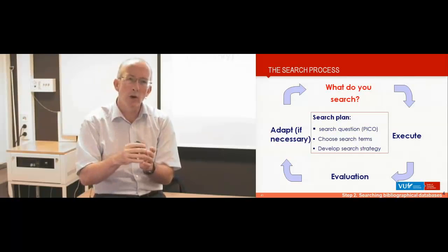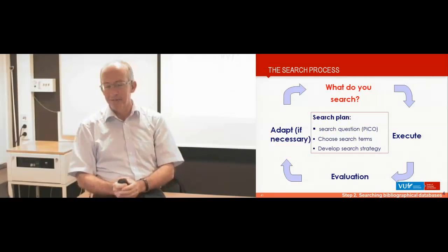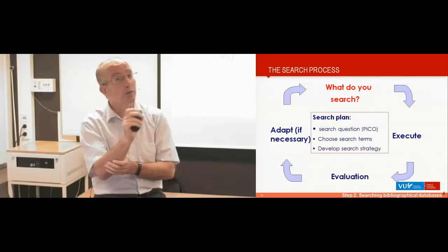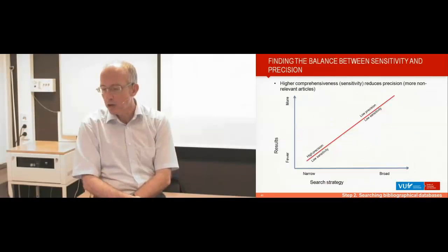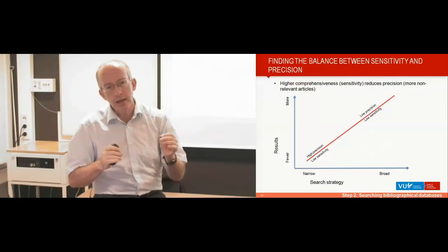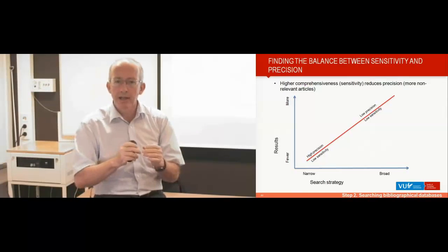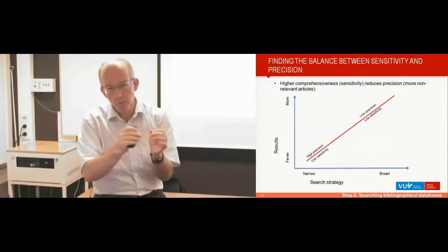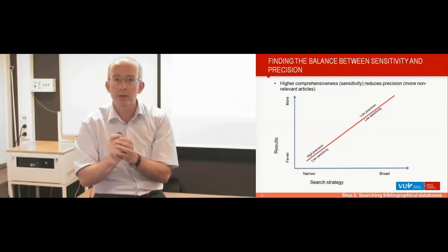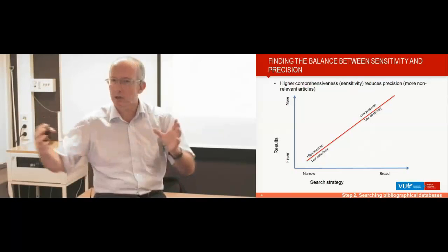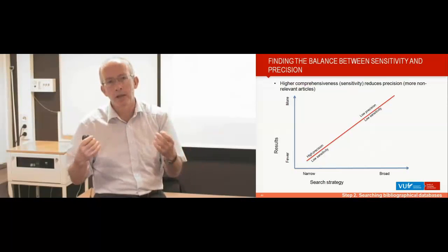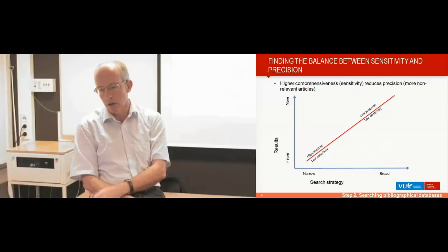You do not want to search all of PubMed — there are millions of abstracts. There is always a trade-off between identifying the right studies and not missing them versus having a narrower search with less work but the risk of missing some studies. There is no golden rule; it depends on the time available and the importance of missing one or two studies. For a larger meta-analysis, it's very normal to have several thousands of abstracts to read.